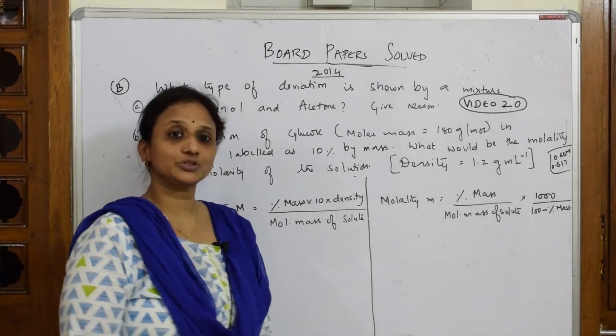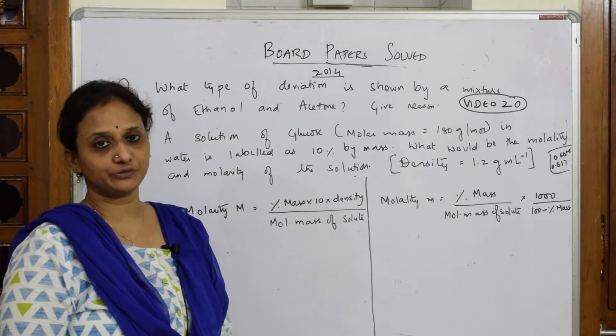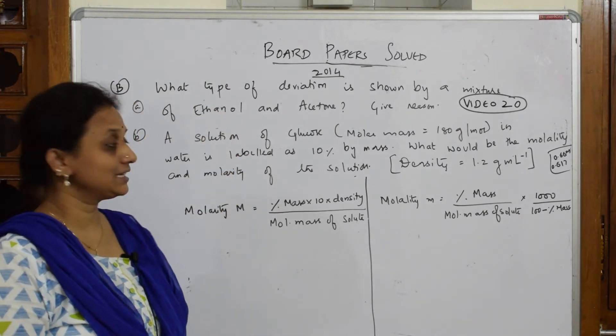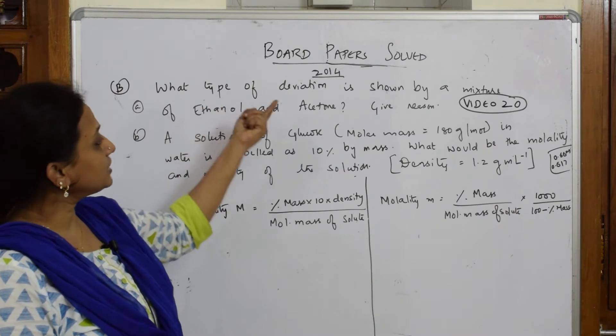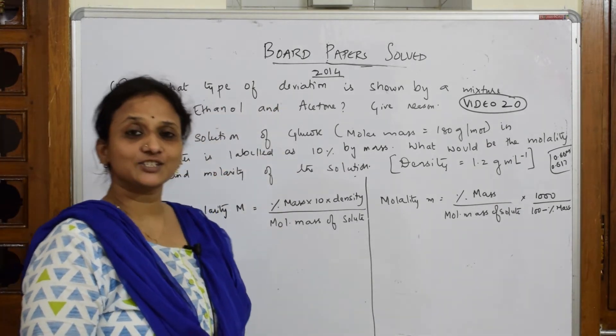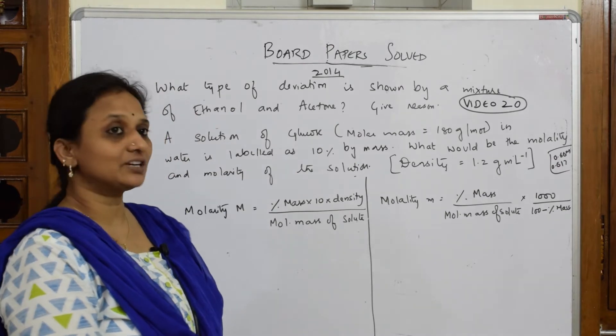Right, so let us come back and do your 2014 paper, that is your part B of the 2014 paper. Let's see the question. So we've already done one part, let's see part B. What type of deviation is shown by a mixture of ethanol and acetone?